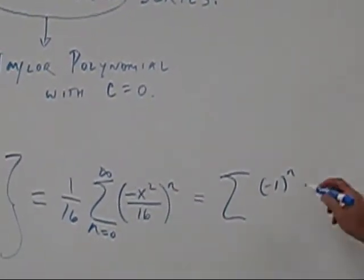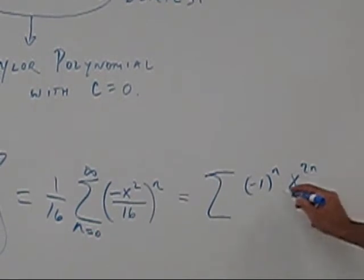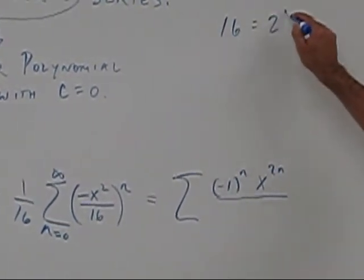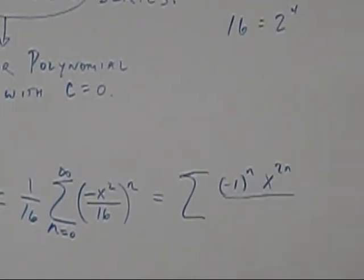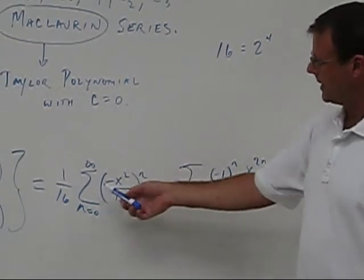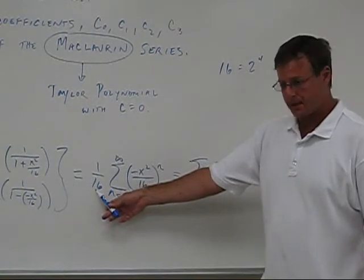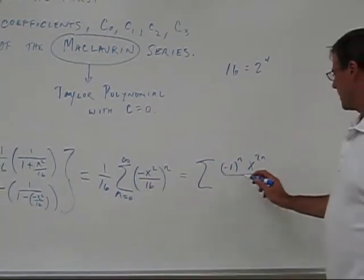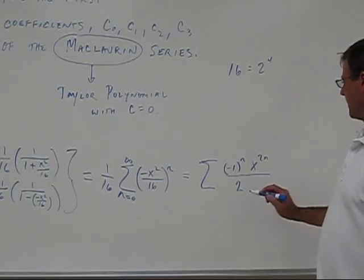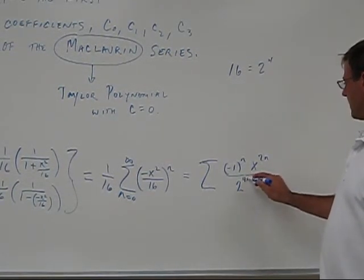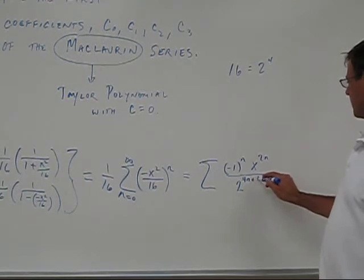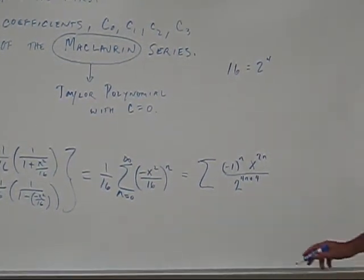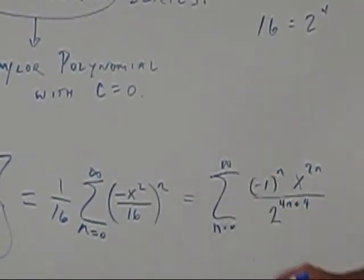I'm going to have an x to the 2n, and what am I going to have on the bottom? 16 is equal to 2 to the 4th. So, this is 2 to the 4n, and I also have another 16, which is another 2 to the 4th. So, this is 2 to the 4n plus 4. And n equals 0 to infinity.